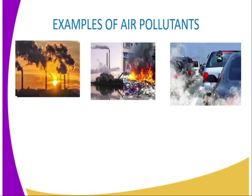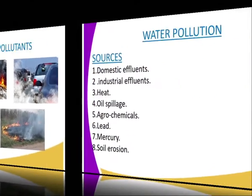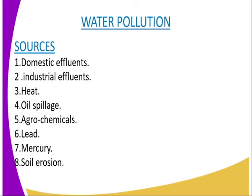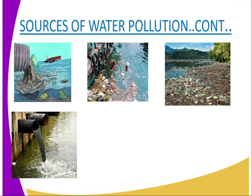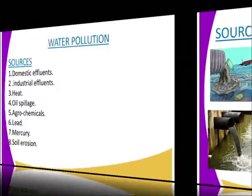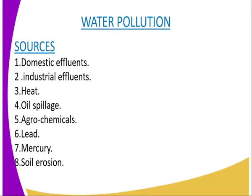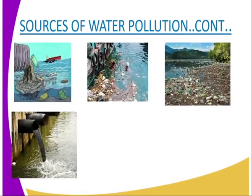We are now going to look at water pollution, whereby its sources include domestic effluents, industrial effluents, heat, oil spillage, agrochemicals, lead, mercury, and soil erosion. There are diagrammatic representations showing how water is being polluted.